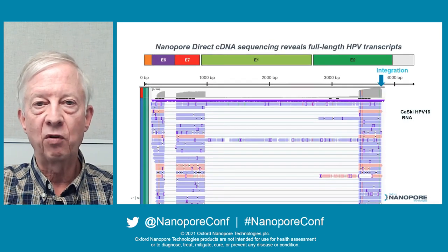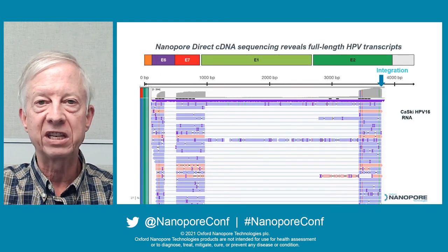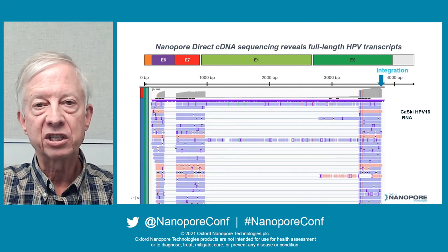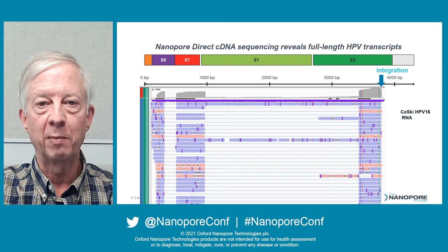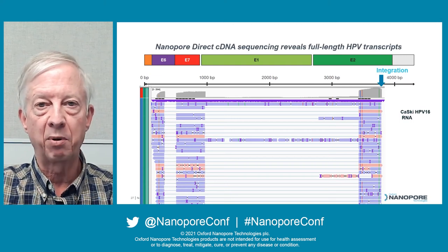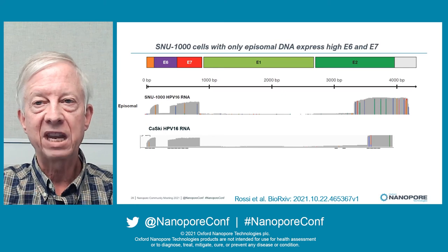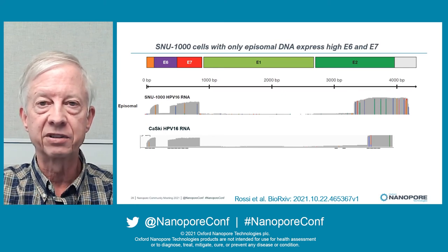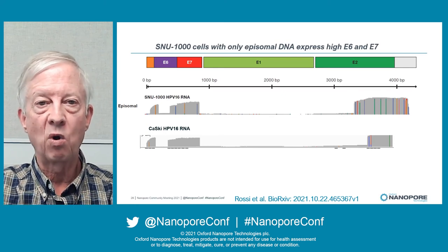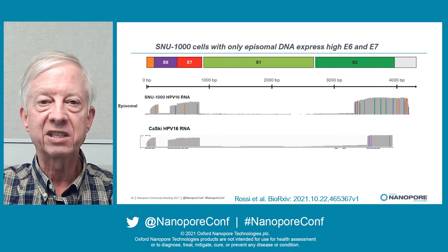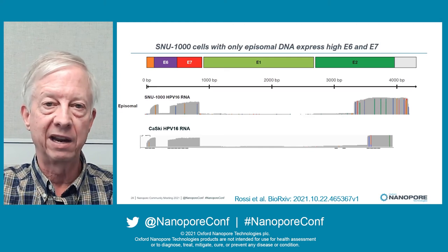We carried out direct full-length cDNA sequencing to determine the structure of HPV transcripts in the Caskey cell line. PolyA-plus RNA is converted to full-length cDNA and sequenced directly without PCR, so the exact structure of each mRNA is determined. There are few transcripts across the E1 gene, and the E2 gene is disrupted by the integration. In the SNU1000 cell line with only episomal HPV, the expression pattern is very similar to Caskey cells — almost no E1 and E2 expression and abundant E6 and E7 — demonstrating that an episomal HPV cell line has an expression pattern similar to one with HPV integration.